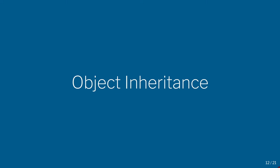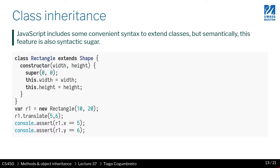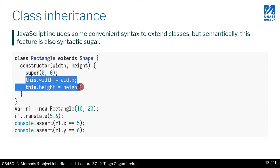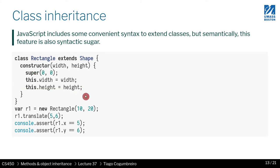We're now ready to talk about object inheritance. JavaScript gives you this syntax for extending a class, where you can write that a rectangle extends a shape. You can see that I'm calling super — the constructor of shape — passing zero, zero, and then declaring the width and the height.